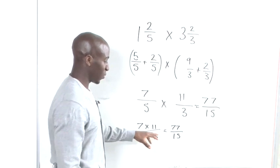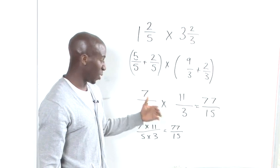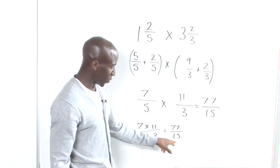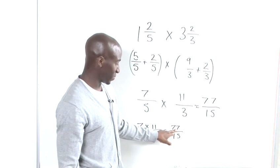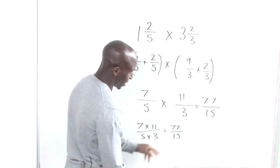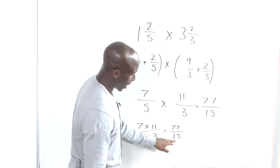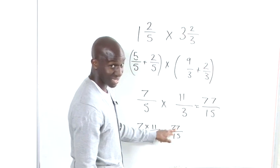The only other thing that we can possibly do with this is to convert it back to a proper fraction. Now we would need to see how many times 15 goes into 77. So the ideal thing to do is to say to yourself, how many times can I multiply up 15 before it passes 77?